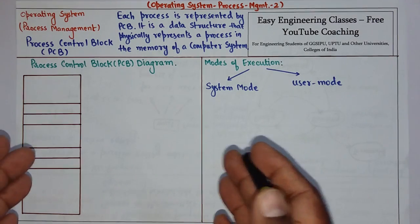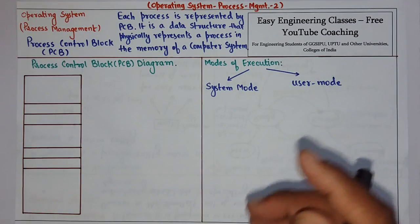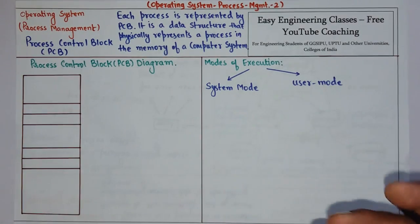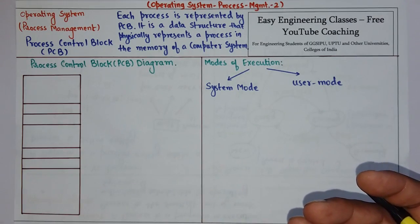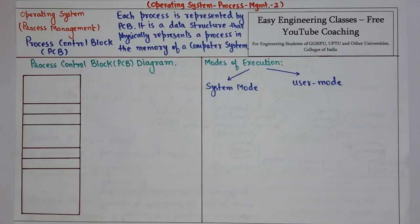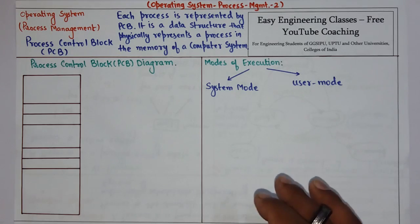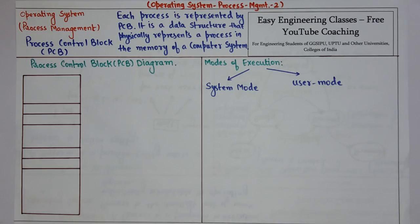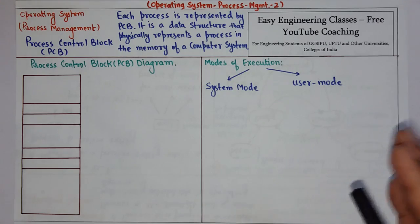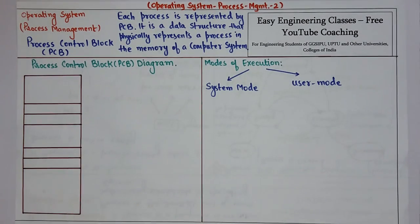Imagine that there are certain processes running in a system and one process is taken out and put on a ready or waiting state. When the process has to resume, there needs to be some information required by the computer system to start or resume the process from the particular location at which the process was interrupted. Those details are stored in a data structure known as the process control block, or in short, PCB.